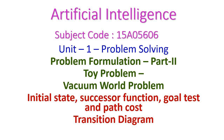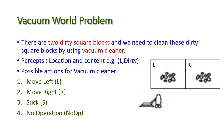Hello friends, welcome to the Artificial Intelligence class. Here we are going to see some AI problems. In this video we are going to learn the vacuum world problem. We are going to derive the initial state, successor function, goal test, and path cost of this vacuum world problem. There are two dirty square blocks and we need to clean these dirty square blocks using the vacuum cleaner, which is our agent.